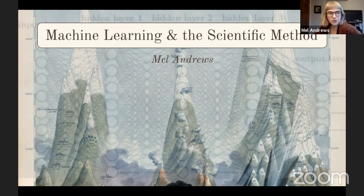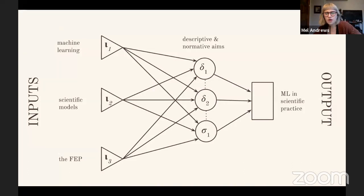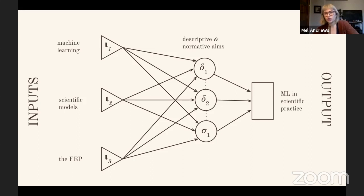Thank you. I'll be talking about machine learning and the scientific method. Specifically, I'm going to look at what the literature on scientific modeling can tell us about how machine learning behaves in science. The inputs I'm bringing to the table are machine learning, the literature in philosophy of science and scientific modeling, and my experience over the past few years specifically with a model called the free energy principle, which has its own complicated history. I'm going to look at descriptive and normative aims in understanding the role of machine learning in science, hoping to give an overall broad-brushstrokes picture of machine learning in scientific practice.